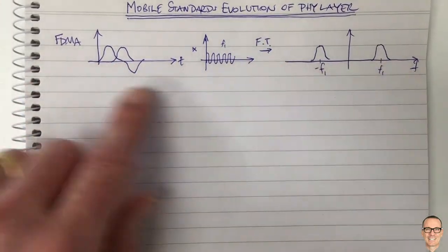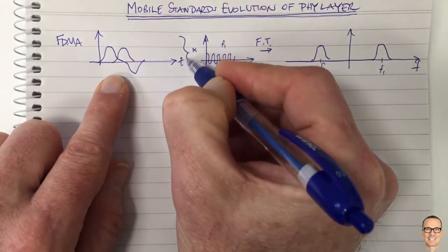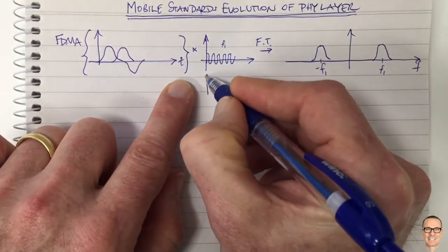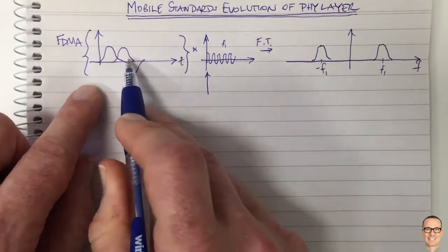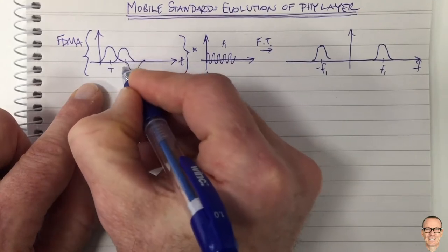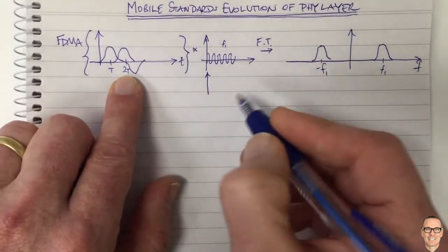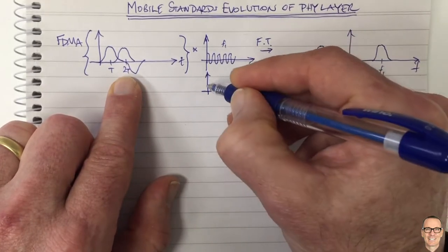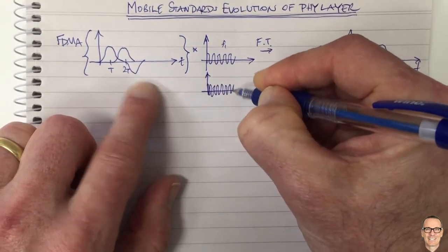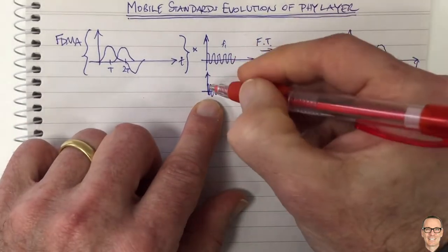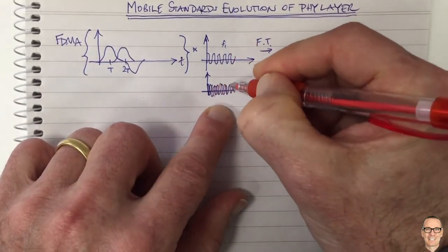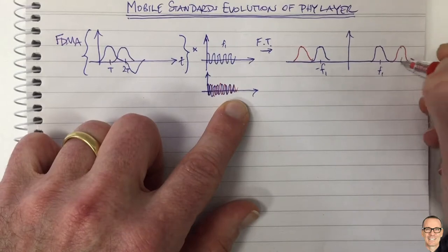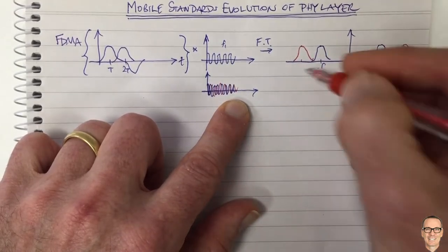This is for a single user, but if we have a collection of users — each sending all the time at this data rate over time intervals t, 2t, and so on — then we have another waveform at a different, higher carrier frequency. In an FDMA system, that puts another signal there, and the two users are separated in frequency.